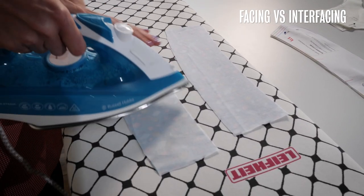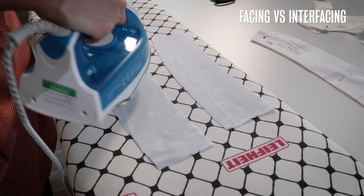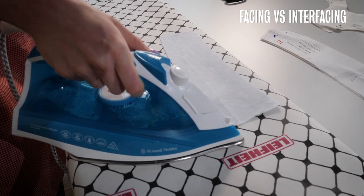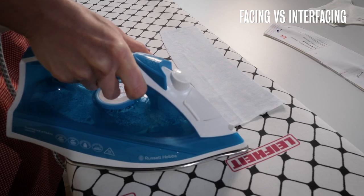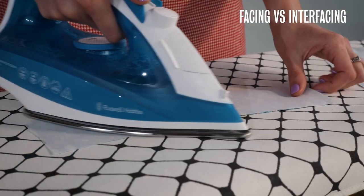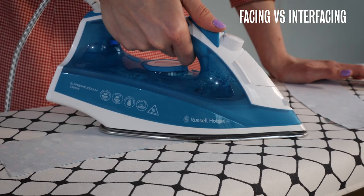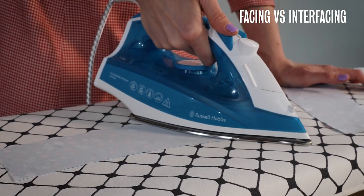And then all I need to do is take the iron and rather than an ironing motion you just want to press you can give it a bit of steam as well and then you'll see that my piece is now interfaced.